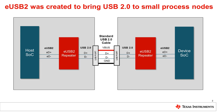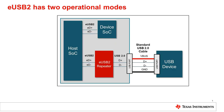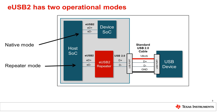vBus and power delivery are not impacted by eUSB2. eUSB2 has two main operational modes: native mode and repeater mode, both shown here for a host SoC. In the most direct form, eUSB2 can be used to connect two devices on the same board, like the connection shown between the host SoC and the device SoC.